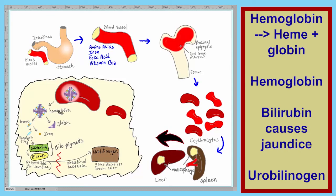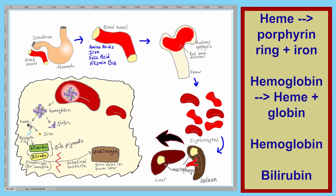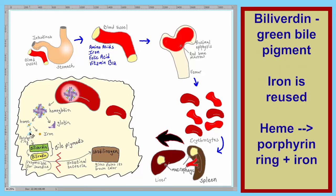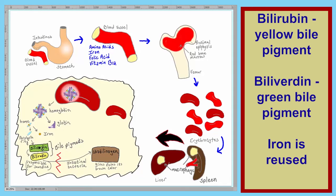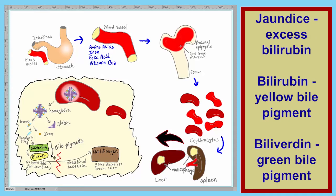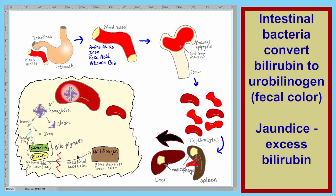To summarize: hemoglobin is broken down into heme and globin. The heme is broken down into the porphyrin ring and the iron — iron can be reused by the body. The porphyrin ring is broken down into a green pigment called biliverdin. Biliverdin is converted to a yellowish-green pigment called bilirubin, which is responsible for jaundice. The bilirubin is eventually transported to the small intestines, where intestinal bacteria convert it to a brownish compound called urobilinogen, which gives feces its brownish color.